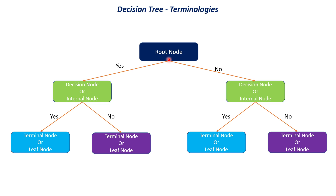So we have a root node, split it into two cases, and then have different decision nodes or internal nodes where we take different features from our dataset. This continues until it reaches a terminal node or leaf node. A decision tree has a root node, multiple terminal or leaf nodes, and any number of decision or internal nodes in between. Now we need to understand which feature to choose for the root node, internal nodes, and terminal nodes — and this is where measures such as entropy, information gain, and Gini impurity are helpful.